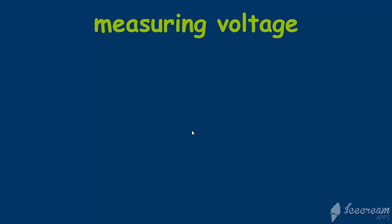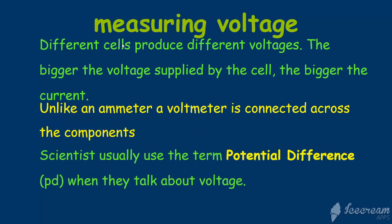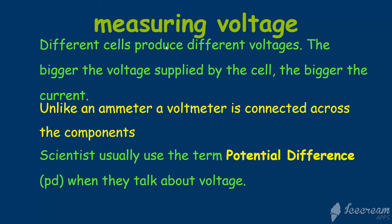Let's see how we measure voltage. If you have different cells, they produce different voltages. The bigger the voltage supplied by the cell, the bigger the current is. There is a very strong relationship between the current and the voltage.